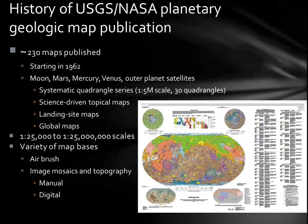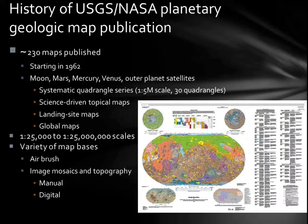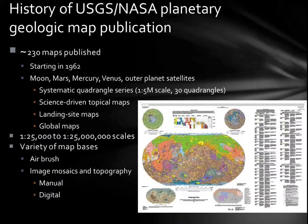The history of the mapping program: we're up to about 230 maps published, started in 1962 — of course we weren't using GIS back then. We have plenty of Moon, Mars, Mercury, Venus maps; we go from all scales. That's a big component of our GIS training — how to deal with scales. We've used airbrush maps, hand mosaics, manual digitizing with old plotters, and now we're doing it all digital.